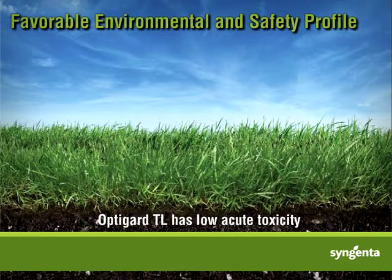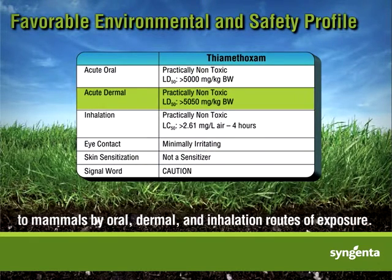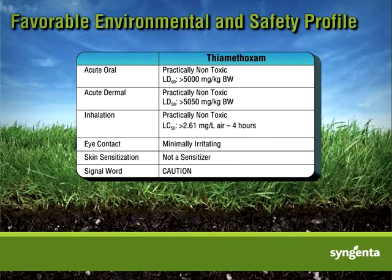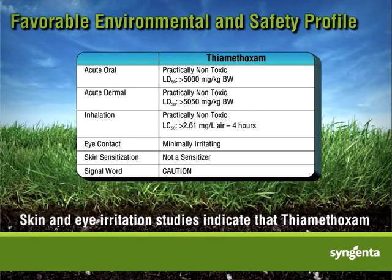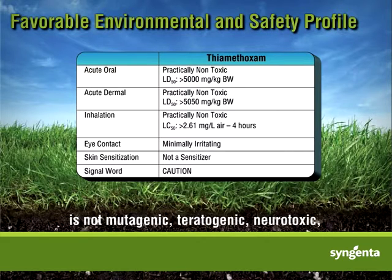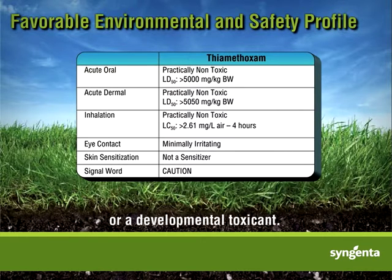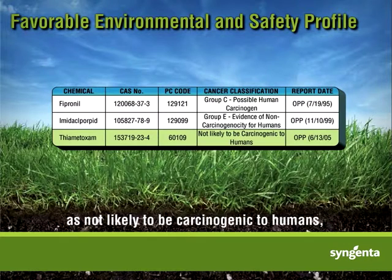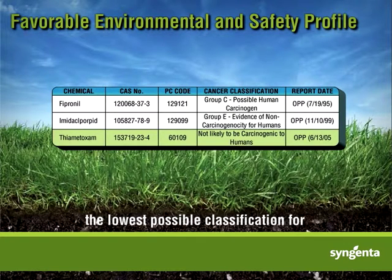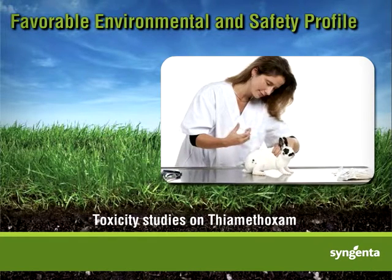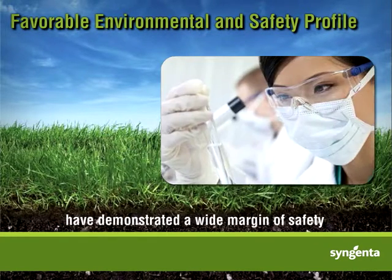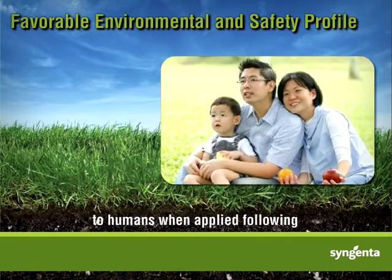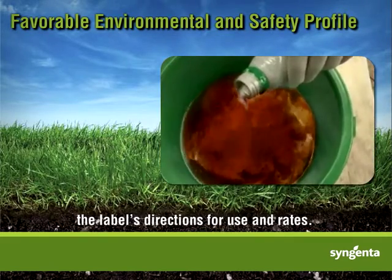Optigar TL has low acute toxicity to mammals by oral, dermal, and inhalation routes of exposure. Skin and eye irritation studies indicate that thiamethoxam is not mutagenic, teratogenic, neurotoxic, or a developmental toxicant. The U.S. Environmental Protection Agency categorized thiamethoxam as not likely to be carcinogenic to humans, the lowest possible classification for carcinogenic potential of chemicals. Toxicity studies have demonstrated a wide margin of safety to humans when applied following the label's directions for use and rates.